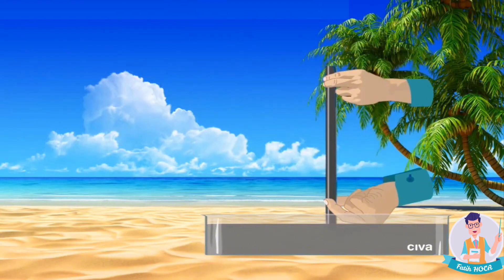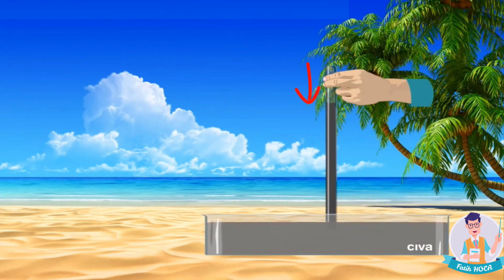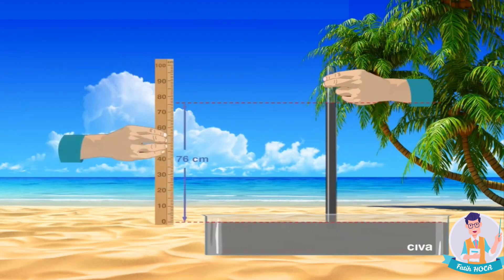Then, when we open the closed end of the glass tube, observe that the mercury level inside the tube drops. This level drops to 76 cm and remains constant here.